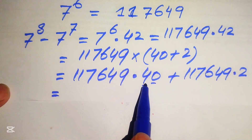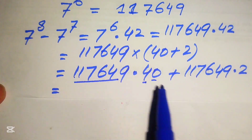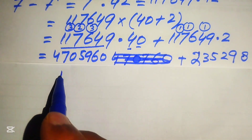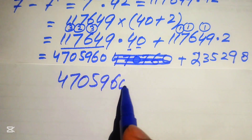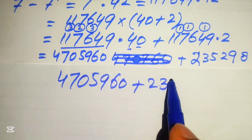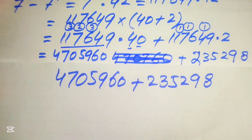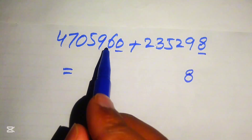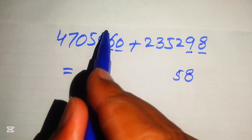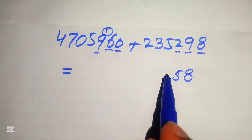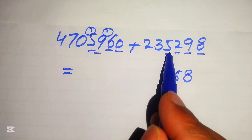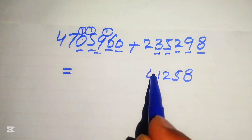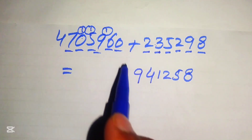For 117,649 times 40: the trailing 0 gives 0, then multiplying by 4 gives 4,705,960. For 117,649 times 2 gives 235,298. Adding these together: 0 plus 8 is 8, 6 plus 9 is 15 (write 5 carry 1), 9 plus 2 is 11 plus 1 is 12 (write 2 carry 1), 5 plus 5 is 10 plus 1 is 11 (write 1 carry 1), 0 plus 3 is 3 plus 1 is 4, 7 plus 2 is 9, and the leading 4 — giving the final answer of 4,941,258.